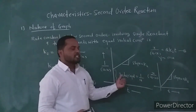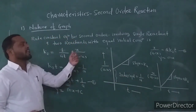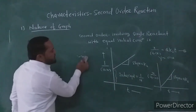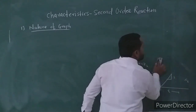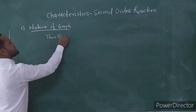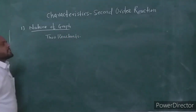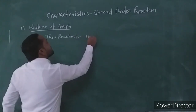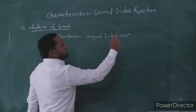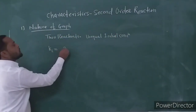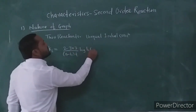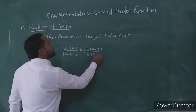Now consider the integrated rate equation for the second-order reaction involving two reactants with unequal initial concentration. In this case, the integrated rate equation is: K2 is equal to 2.303 divided by (A minus B) into T, times log of B(A minus X) divided by A(B minus X).